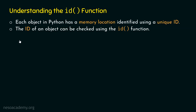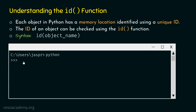The syntax of the id function is pretty simple. We just need to type 'id' and within parentheses, specify the object name whose id we want to know. Now let's understand this entire concept with the help of an example. For this, let's open our command prompt and activate the Python interactive shell.